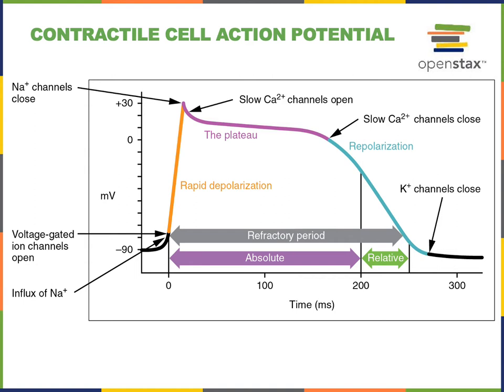As voltage-gated sodium channels become inactivated, L-type calcium channels open and voltage-gated potassium channels open. This causes the plateau phase of the contractile cell action potential because the positive charges that flow into the cell through the L-type calcium channel are balanced by the positive charges that flow out of the cell through the voltage-gated potassium channel.